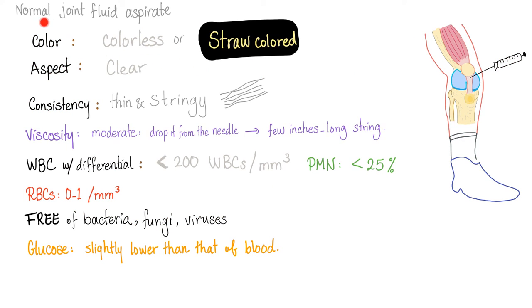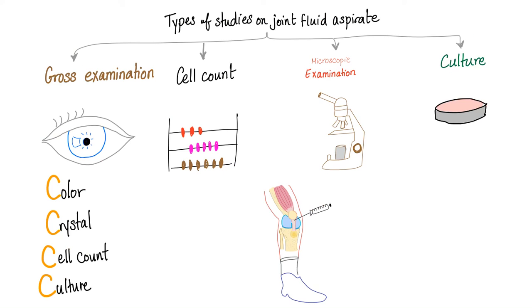Here is the great slide about the normal joint fluid aspirate. It should be colorless, clear, and the consistency thin and stringy — 2 to 2.5 centimeters viscosity string test. What types of studies should you do on joint fluid aspirate? Gross examination, cell count, microscopic examination, and culture. If you are a mnemonic maniac: color, crystals, cell count, culture — the 4 C's.